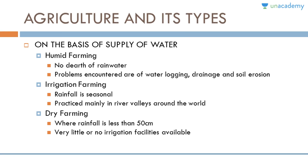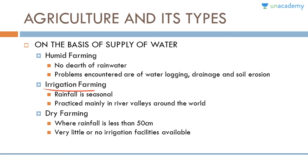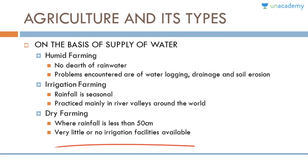Another classification is based on water supply: humid farming is practiced where there is no shortage of rainwater, though problems of waterlogging, drainage, and soil erosion are encountered; irrigation farming is practiced where rainfall is seasonal, mainly in river valleys, with irrigation as the main water source; and dry farming is practiced where rainfall is less than 50 centimeters with little or no irrigation facilities available.